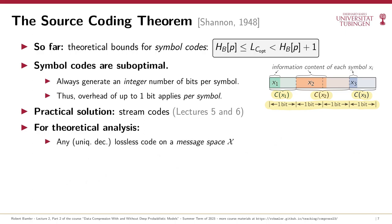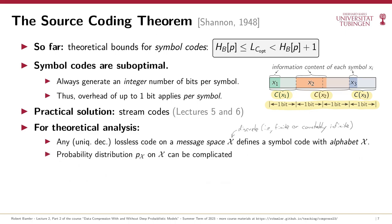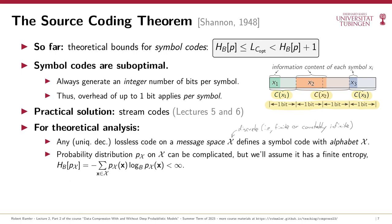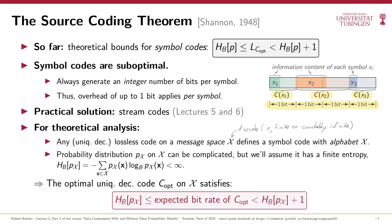Before getting to stream codes, let's generalize our theoretical bounds beyond symbol codes. Consider any uniquely decodable lossless compression code operating on some discrete message space X. We can interpret it as a giant codebook for a symbol code with alphabet X, so bitrates for messages become codeword lengths for symbols. As long as the probability distribution over messages has finite entropy, the bounds derived in this video give a lower and upper bound on the expected bitrate of an optimal code — this is the famous source coding theorem.